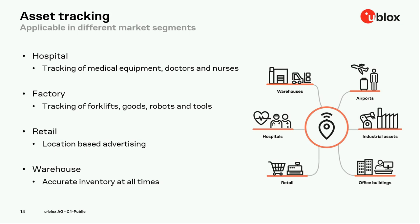Of course, we also have indoor positioning and asset tracking — the most common use case. This is about finding and tracking an asset, maintaining accurate inventory, or optimizing processes in a factory. It could also be people tracking for worker safety or emergency situations. You can analyze people flow in a building or personalize the environment for a specific person. Applicable market segments include hospitals — where tracking equipment can reduce the number of units needed — factories for tracking forklifts, robots, and tools, retail for analyzing consumer behavior, and warehouses for accurate inventory tracking.